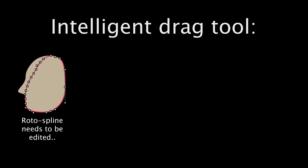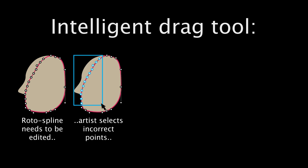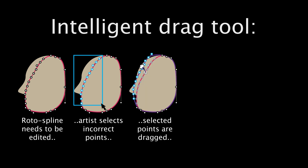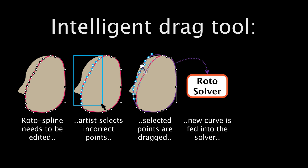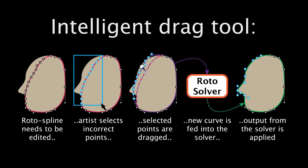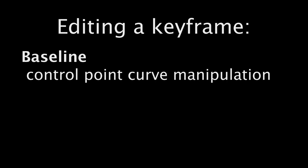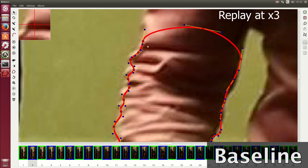Our intelligent drag tool helps reduce the time taken to edit a keyframe. Rather than moving points individually, the artist selects a group of incorrect control points and roughly drags them towards the correct location. In real time, this new curve is provided to the solver as if it were a tracker output. The optimised output can then be applied to deform the selected points to an appropriate shape. We show a comparison of our new tool to the baseline technique. Under existing methods, the control points of the spline have to be manipulated directly, resulting in a large number of local edit operations.